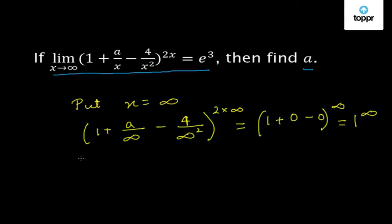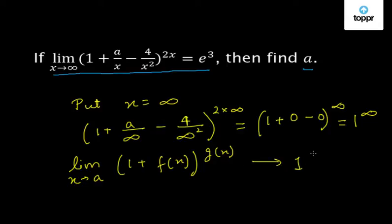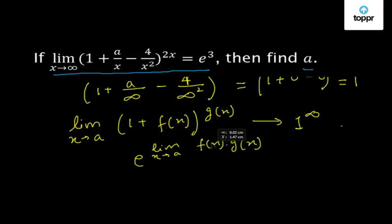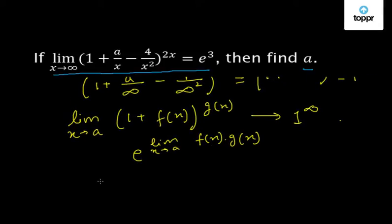Now we can see that this limit is of the form lim(x→a) [1 + f(x)]^g(x) and gives an indeterminate value of 1^∞. So we can simplify this as e^[lim(x→a) f(x)×g(x)]. Let us simplify the limit given to us.